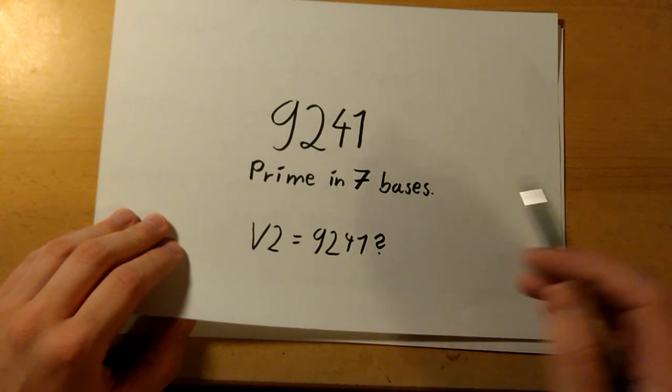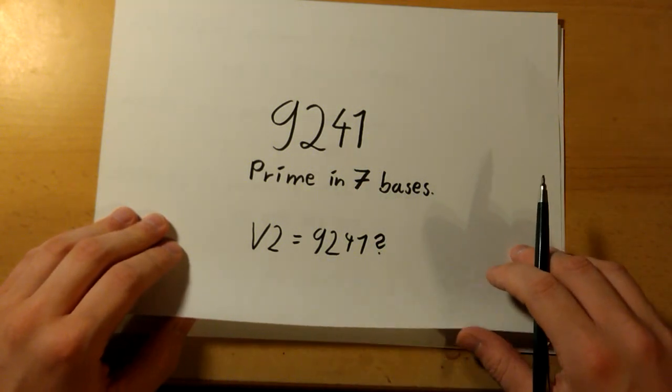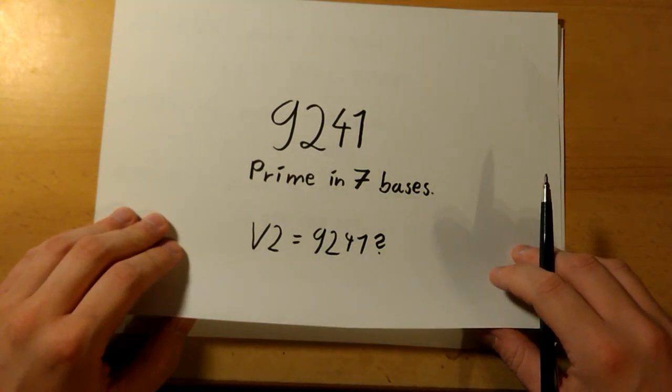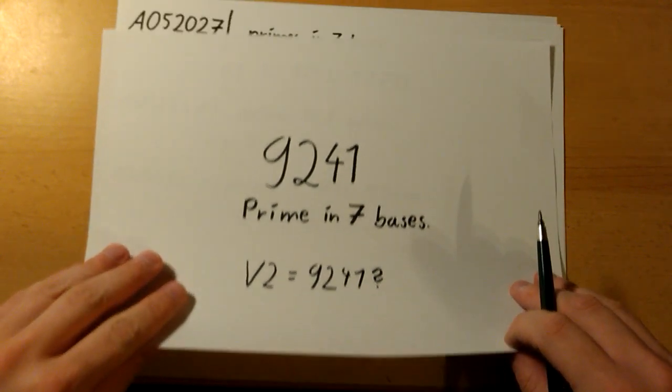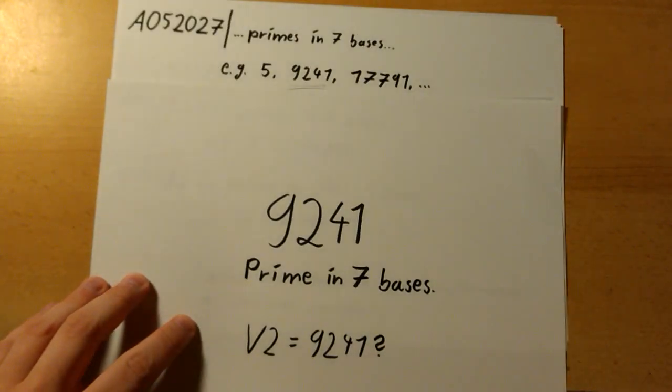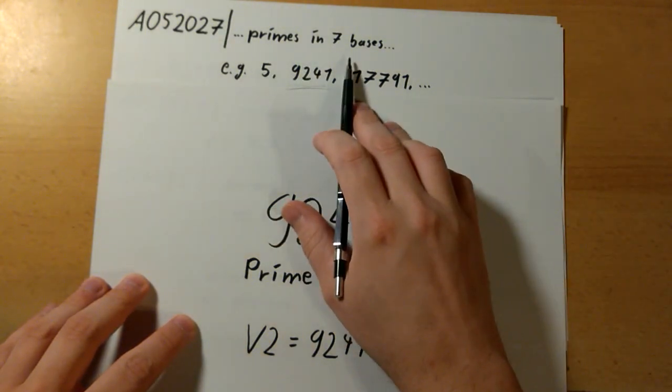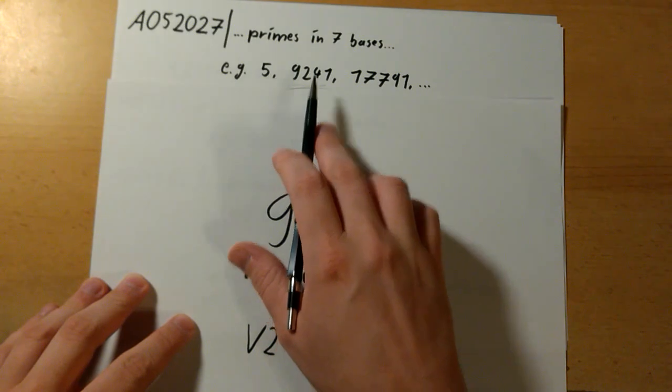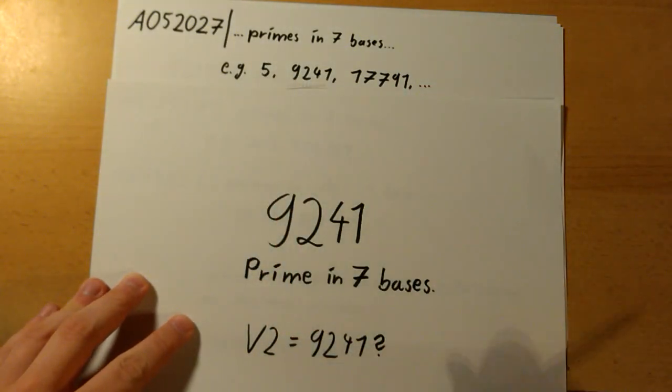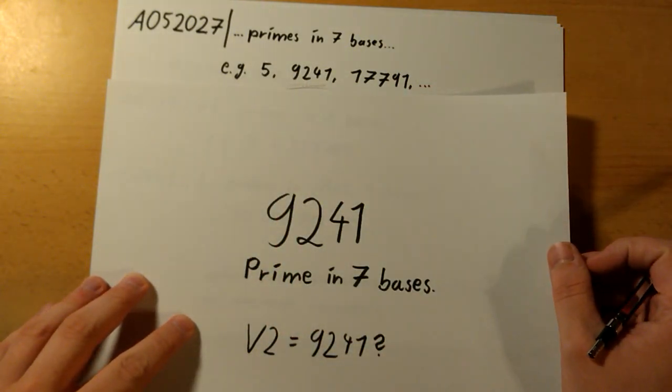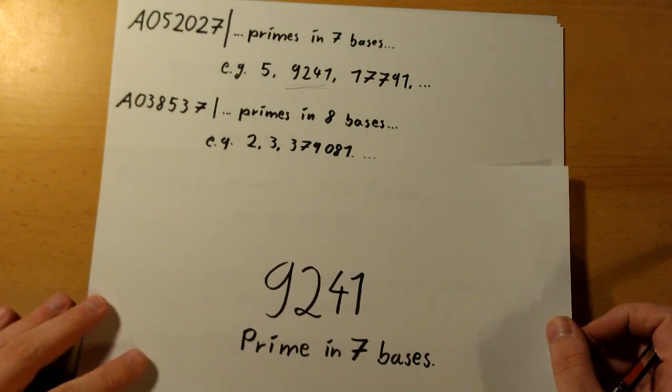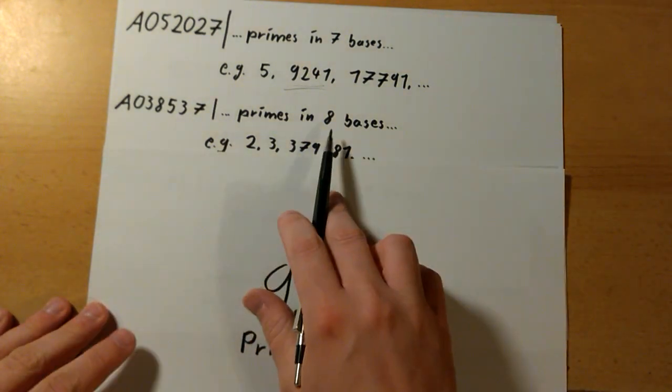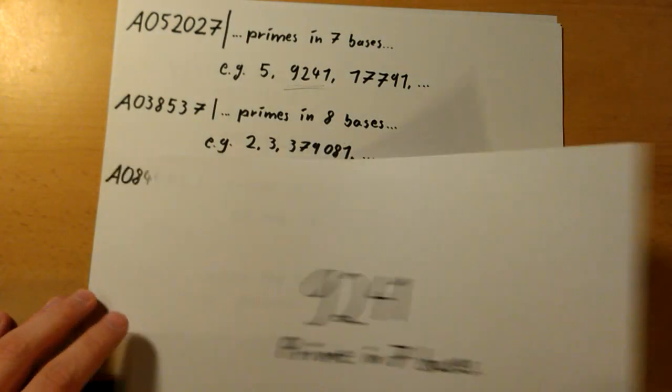While the code ran and looked for more numbers being prime in more bases, I checked the OEIS, the online encyclopedia of integer sequences, and I found this sequence showing all primes in seven or more bases. And look, this number turns up—it's primes in seven bases.